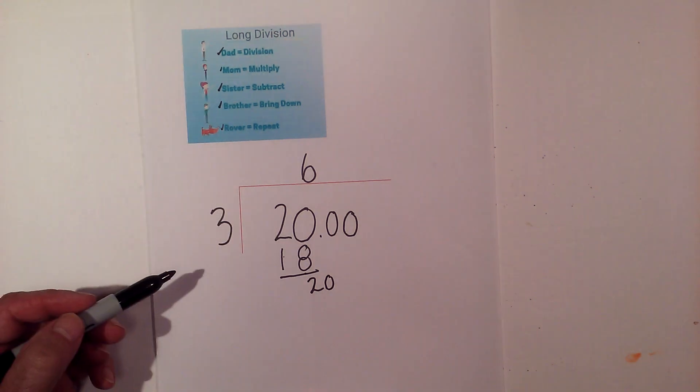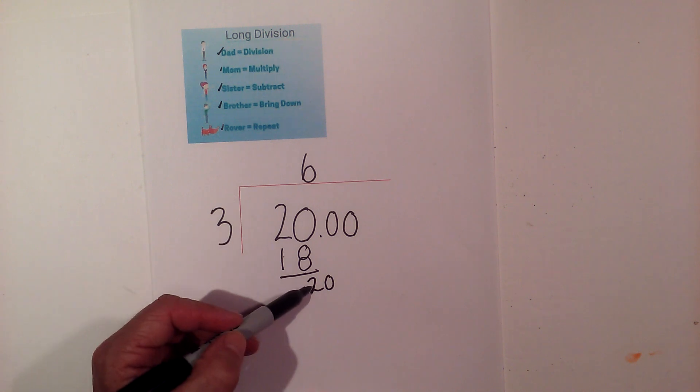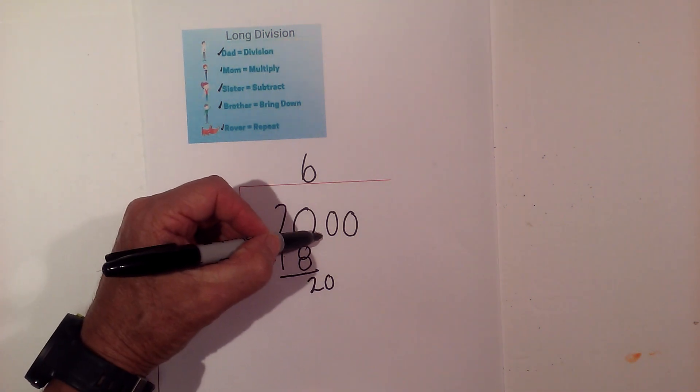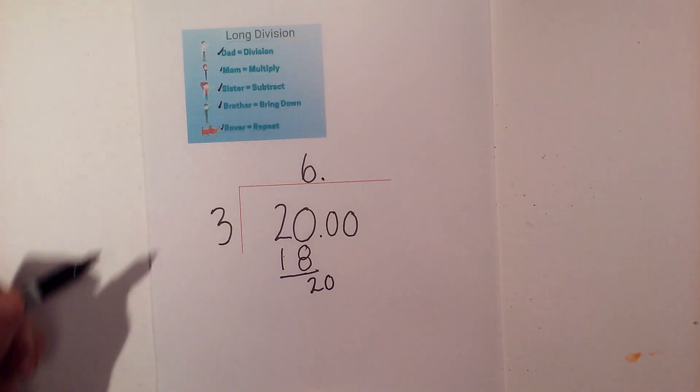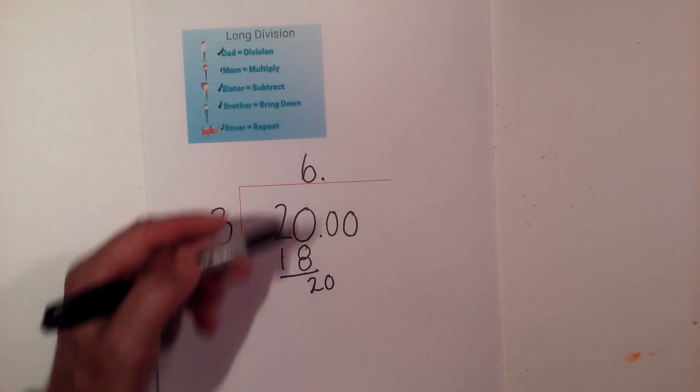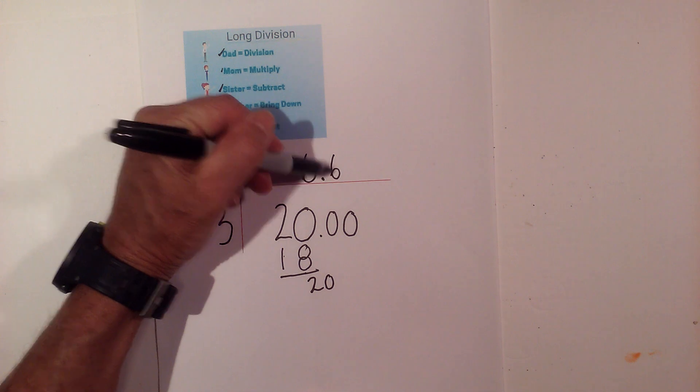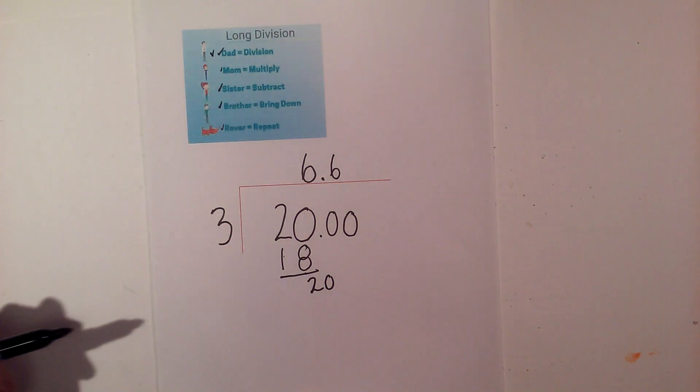So I start back at division. So 3 will not go into 2, but 3 will go into 20. But before this I need to move the decimal point to here. 3 goes into 20 six times. So I've done division a second time.